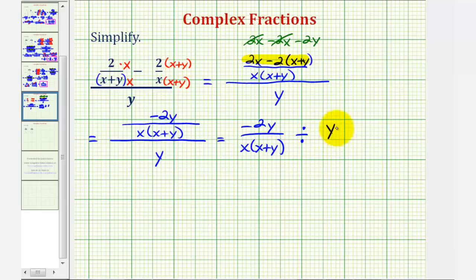Remember, we can make y into a fraction by writing y as y over one. So instead of dividing by a fraction, we normally multiply by the reciprocal. So this division problem is equivalent to negative two y, over x times the quantity x plus y, times the reciprocal of y over one, which would be one over y.